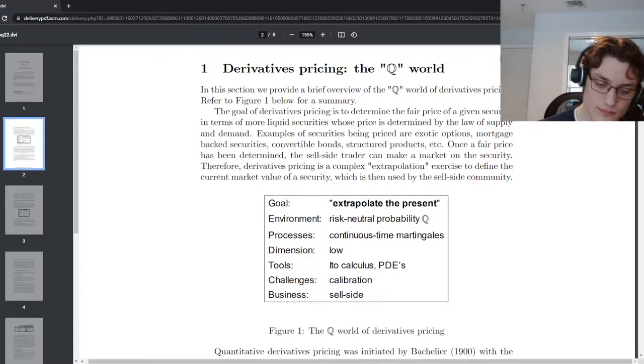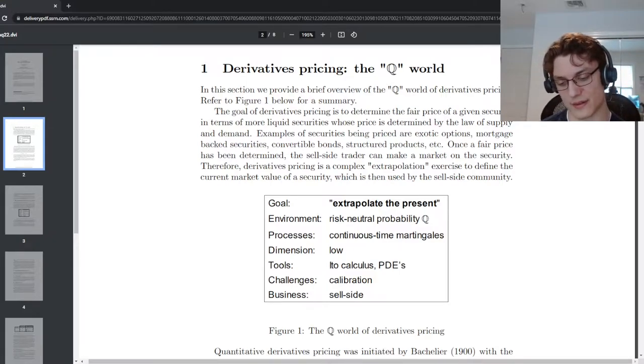So when we say that our goal is to extrapolate the present, what are we talking about? Well, since prices exist, and we can derive analytical, numerical, sometimes quasi-closed form solutions to these derivatives prices, then the goal turns into an extrapolation problem, a contemporaneous extrapolation problem.